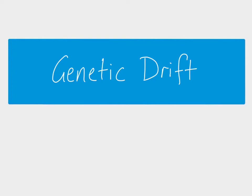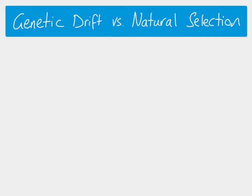Hi everybody. In this video we are looking at genetic drift, and specifically examples of genetic bottlenecks and the founder effect. First of all, I want to be clear about the difference between genetic drift and natural selection.